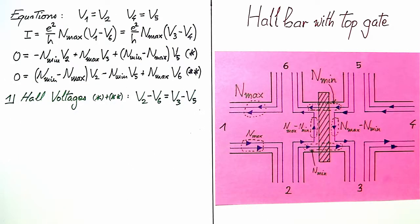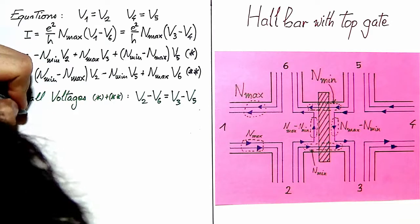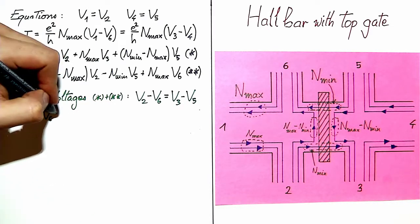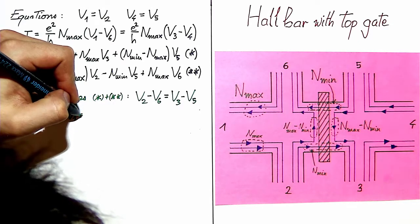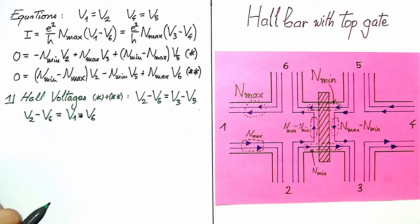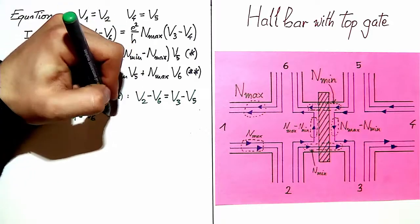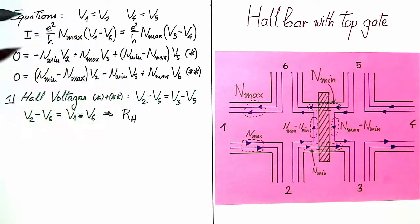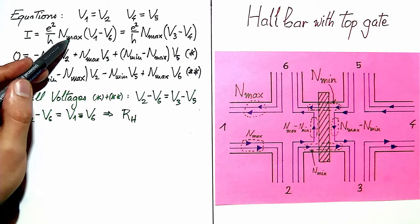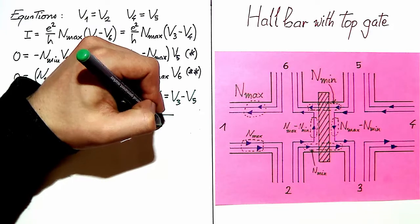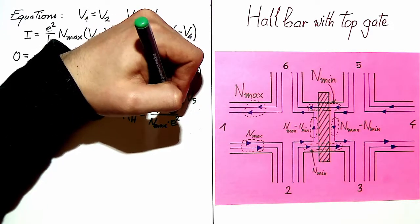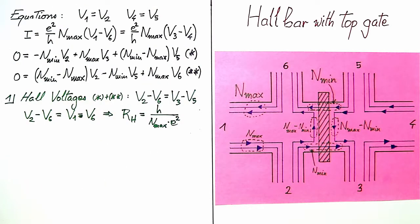And first by adding those two equations, star and double star, we can easily see that the two Hall voltages are equal. In fact if you add this, all the terms containing N_min will cancel out, and we are left with V2 minus V6 equal to V3 minus V5. So we already have found that the two Hall voltages that we can measure will be equal for all possible values of N_min and N_max. Now let's get the numbers. V2 minus V6 can be calculated by using the fact that V2 is equal to V1. V1 minus V6 appears here so that we are able to read the Hall voltage from this line. It's simply H over N_max times E squared, which is the same as what we expect when no gate is present.